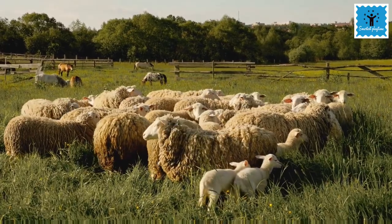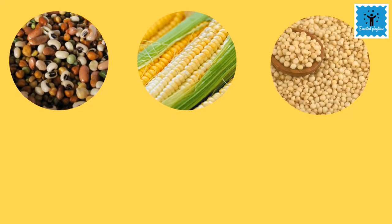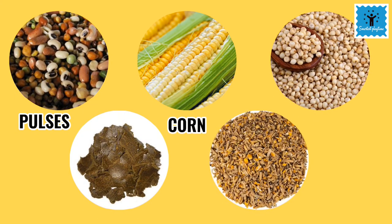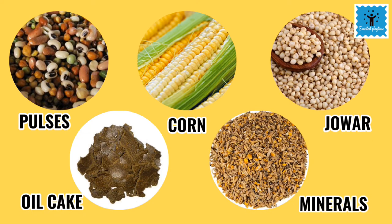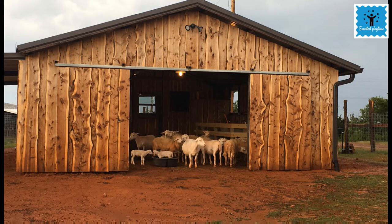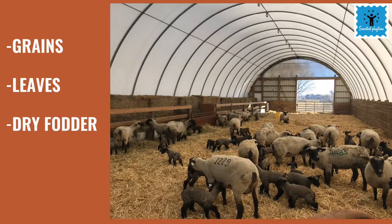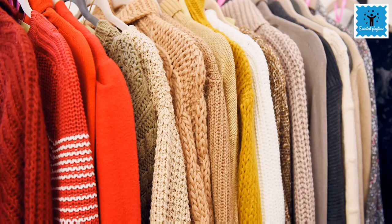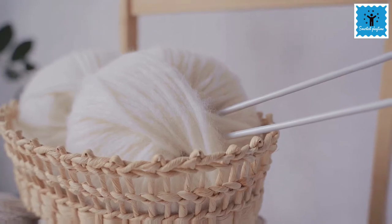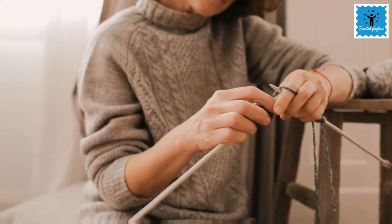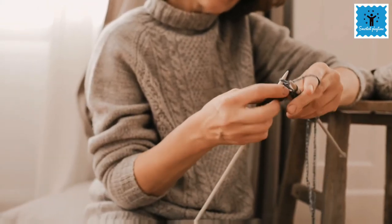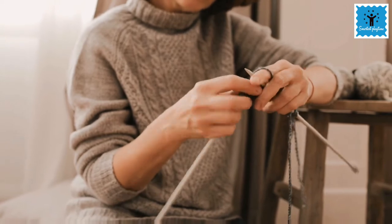Sheep are herbivores and like to eat grass and leaves, so shepherds take their herd of sheep for grazing. Apart from grazing, shepherds also feed sheep on a mixture of pulses, corn, jowar, oil cake, and minerals. In winter, sheep are kept indoors and fed on grains, leaves, and dry fodder. The sweaters and shawls we wear in winter are made of wool from sheep hair.